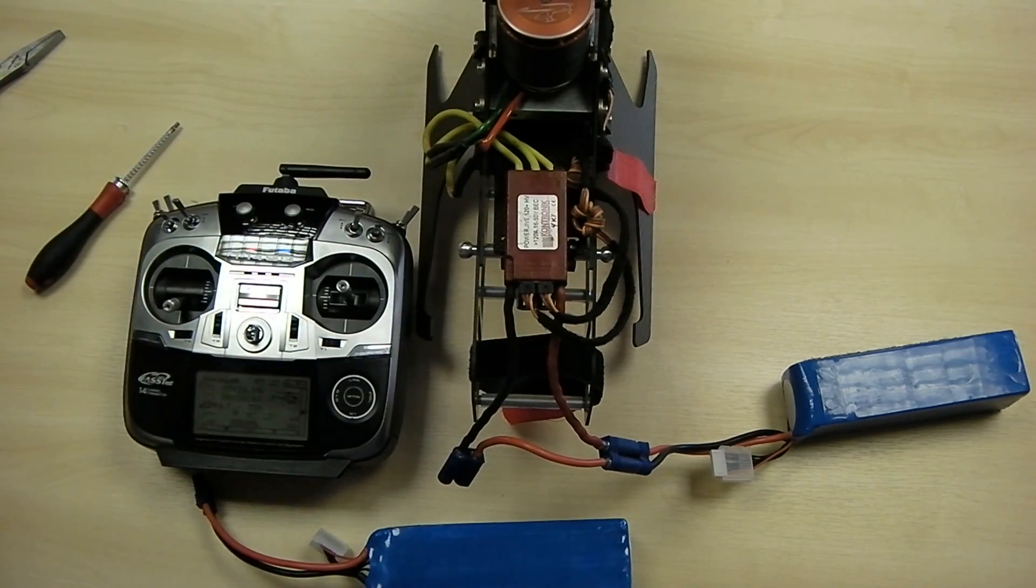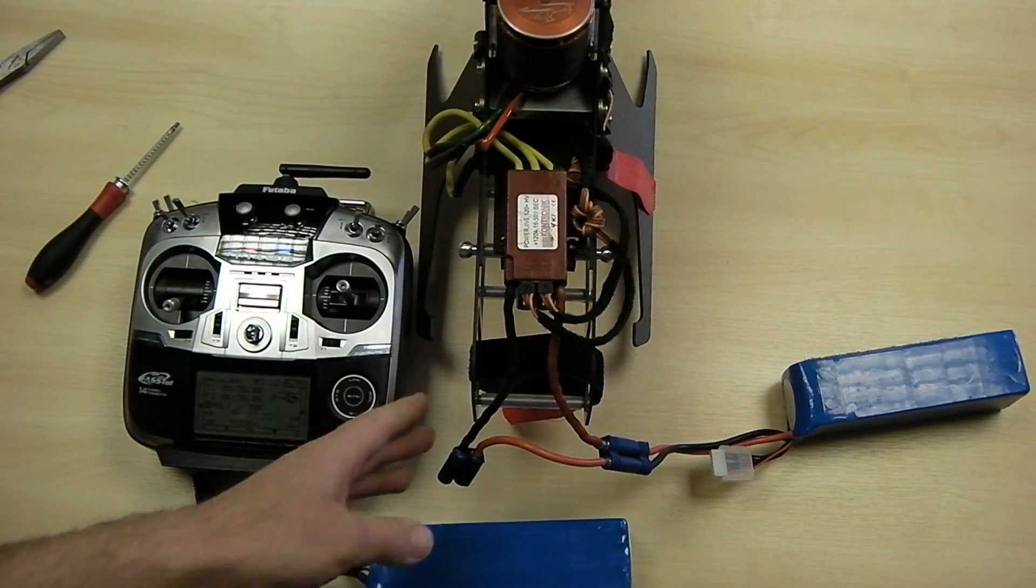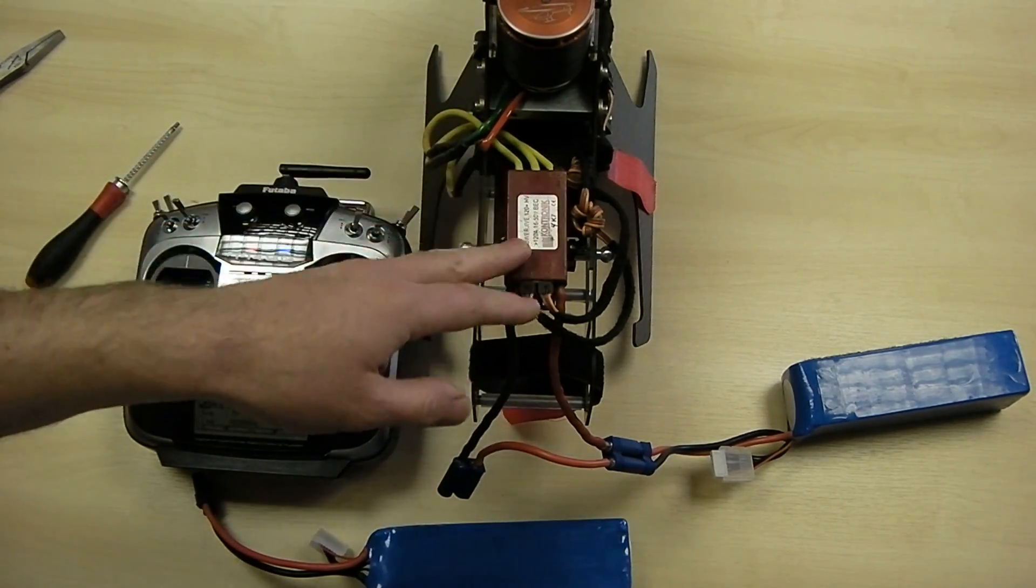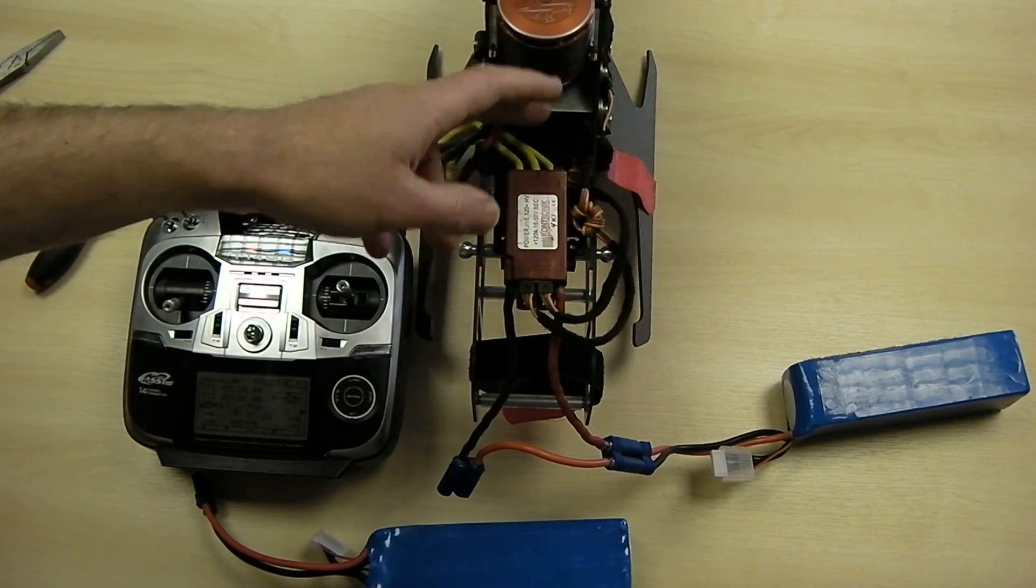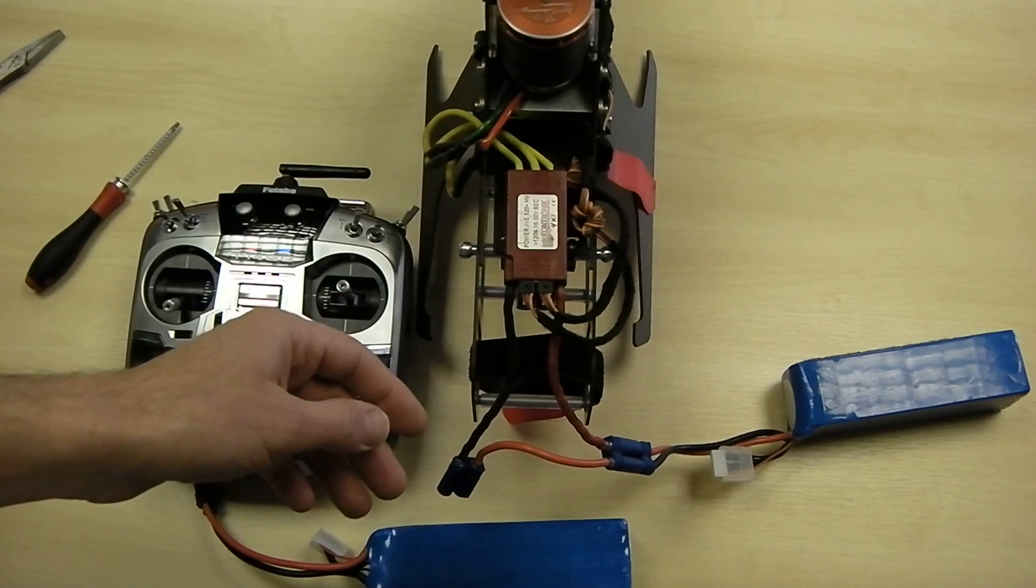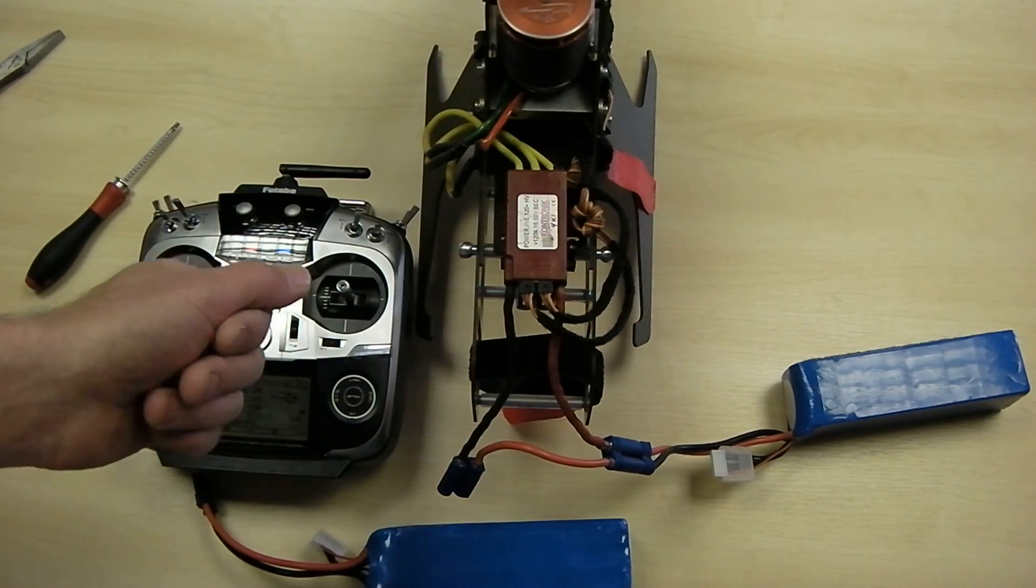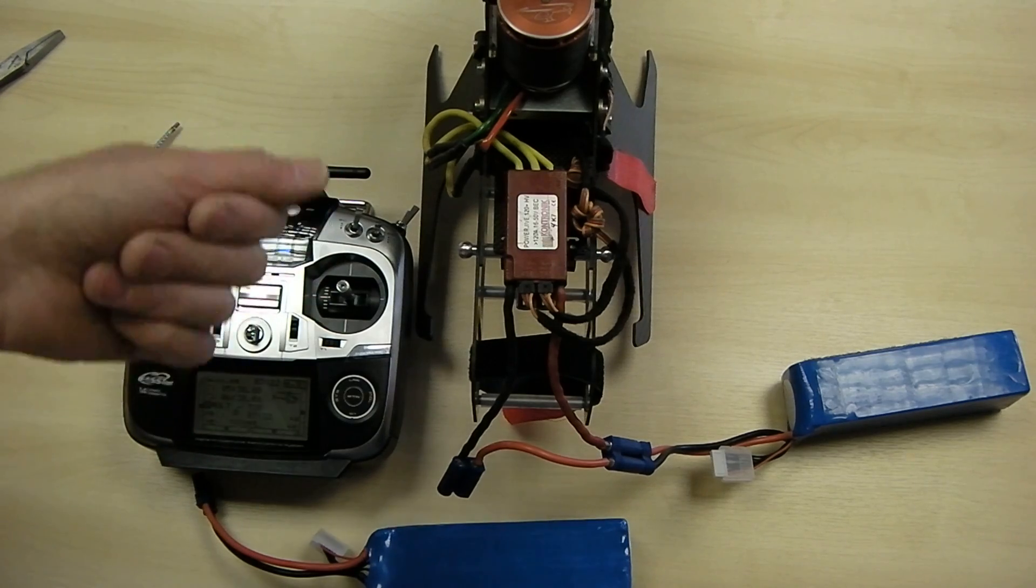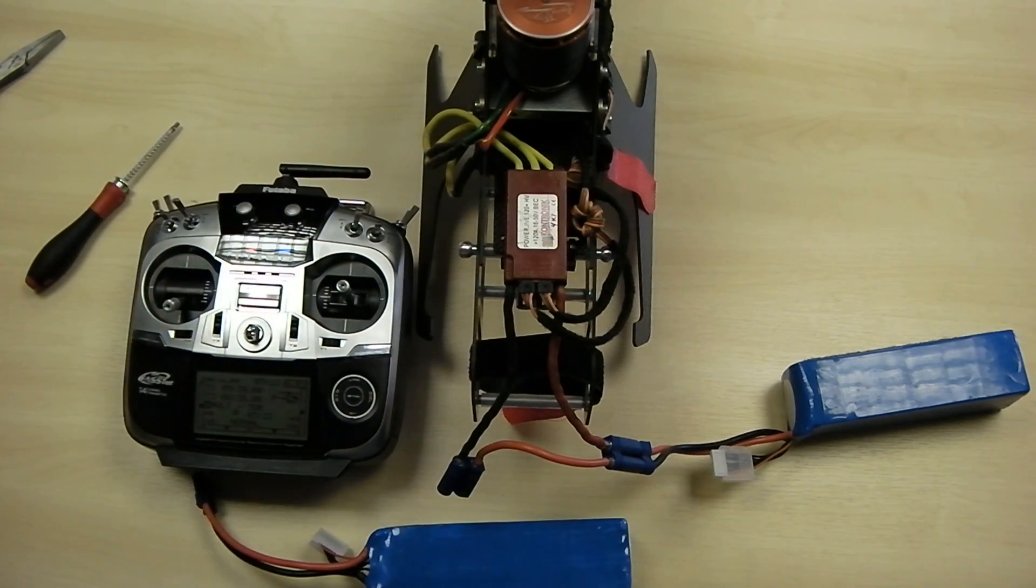What you need to do is power up the model. It will give you the initialization tones. After they've completed, you pull the jumper. It will then give you another set of tones to confirm it's gone into setup mode. Then from there, it will start to count the beeps, which correspond to each mode.